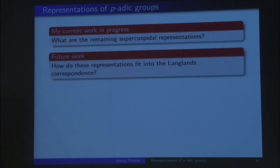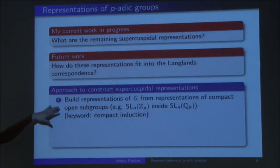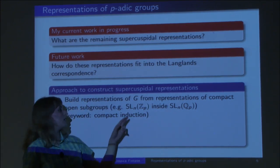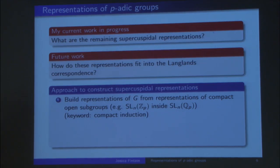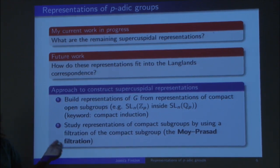Let me tell you a bit more about the details. All the representations so far are constructed in two steps. One step is that we build the representation of our group G from representations of compact subgroups — that's why it's important that we have all these compact subgroups, like Z_P. For example, to get a representation of SL_N(Q_P), we might start with representations of SL_N(Z_P). The second step is studying the representations of these compact subgroups using the Moy-Prasad filtration — that's where the Moy-Prasad filtration comes into the game.